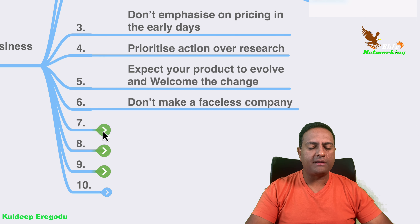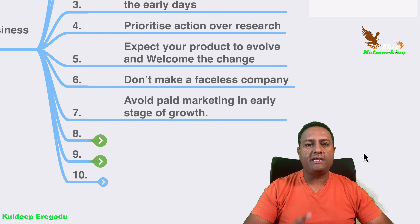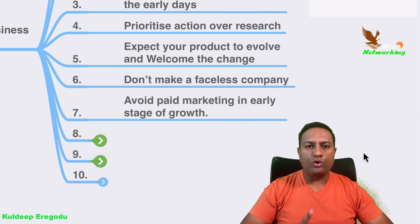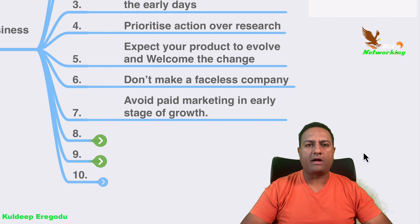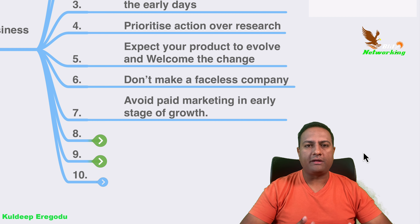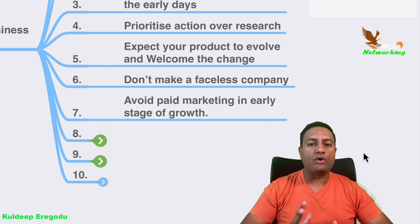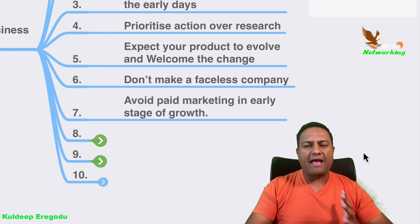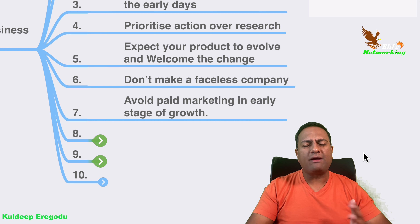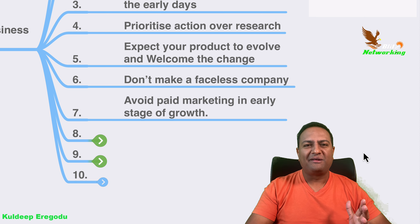Step seven: avoid paid marketing in the early stages of growth. When you're growing, don't go for paid marketing — go with only organic marketing. There is a lot of room for organic marketing. People will automatically come and look for what you have if it is interesting.